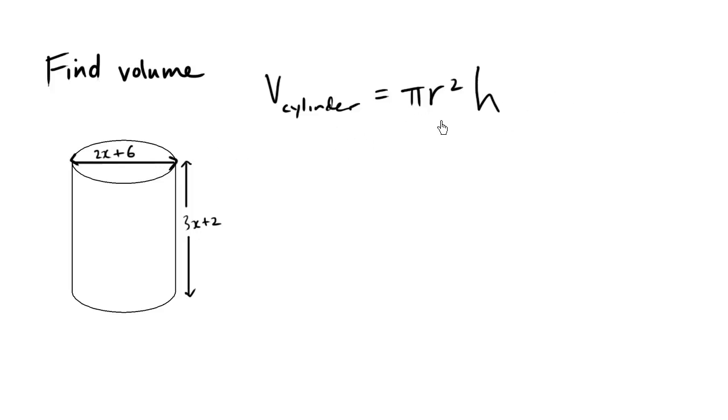So the question is, what is our r value? What is the radius? We know that the diameter is 2x plus 6, so the radius must be half. So the radius here is half of 2x plus 6, which is x plus 3.